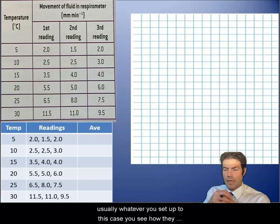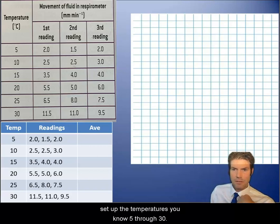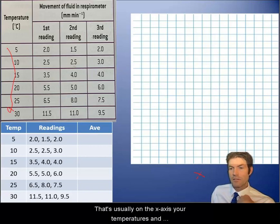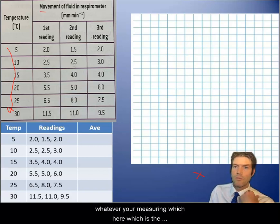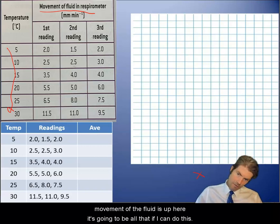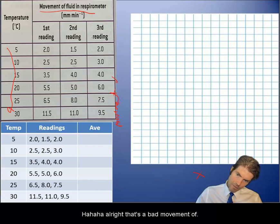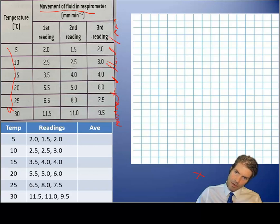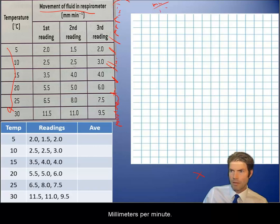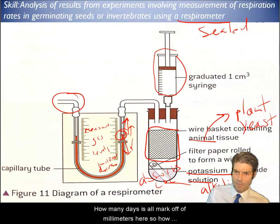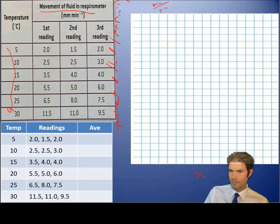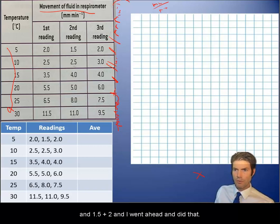What you need to do is be able to make a graph from information like this, so I'm going to take you through that. The first thing you want to do is think about what our x and y axis is going to be. Usually whatever you set up - in this case the temperatures, 5 through 30 - that's usually on the x-axis. Whatever you're measuring, which here is the movement of the fluid, is up here. Movement of fluid, millimeters per minute to the negative one, which means millimeters per minute.